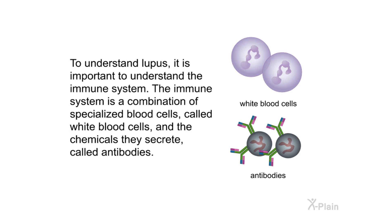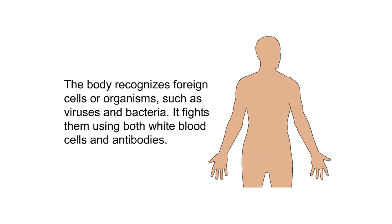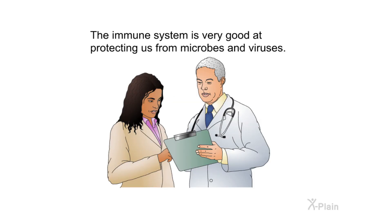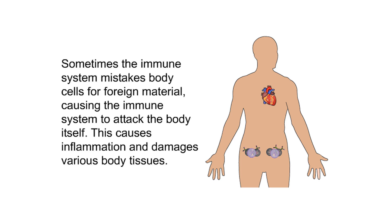To understand lupus, it is important to understand the immune system. The immune system is a combination of specialized blood cells called white blood cells and the chemicals they secrete called antibodies. The body recognizes foreign cells or organisms such as viruses and bacteria, and fights them using both white blood cells and antibodies. The immune system is very good at protecting us from microbes and viruses.